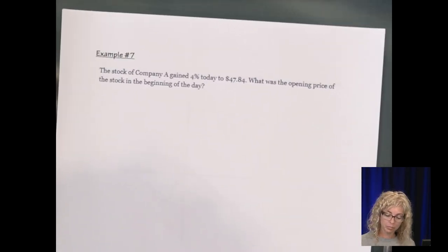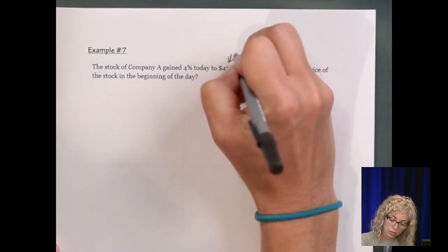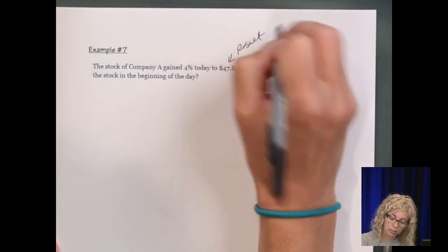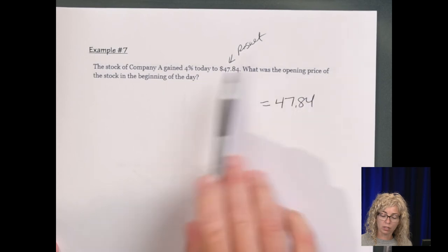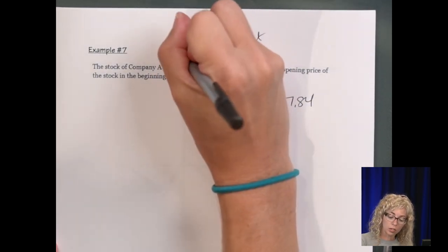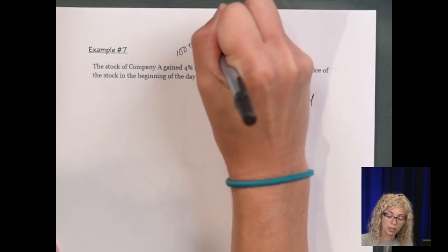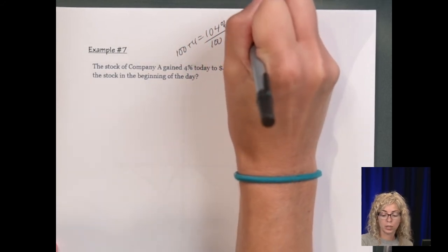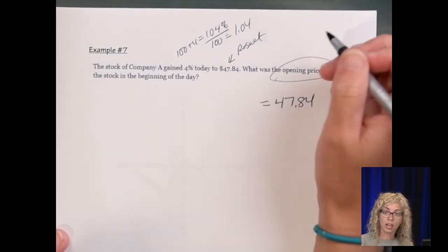All right. Example seven. The stock of company A gained 4% today to get to $47.84. So this is a result. What was the opening price of the stock? Well, if it gained 4%, so 100 plus 4, it's at 104%. Divide by 100, that's 1.04. So it is exponential.